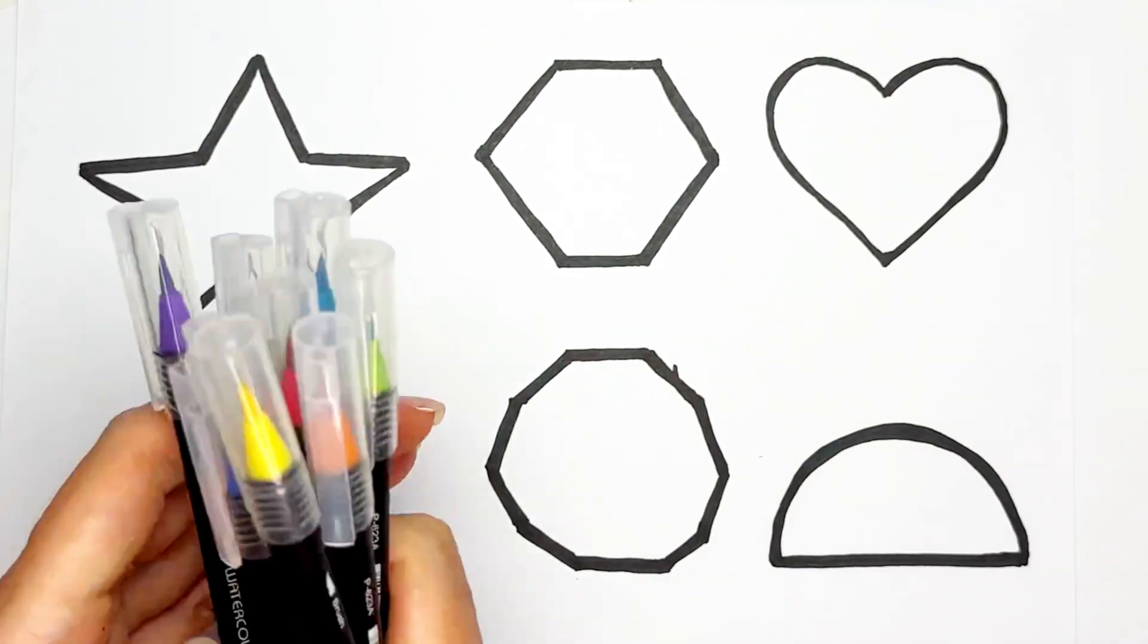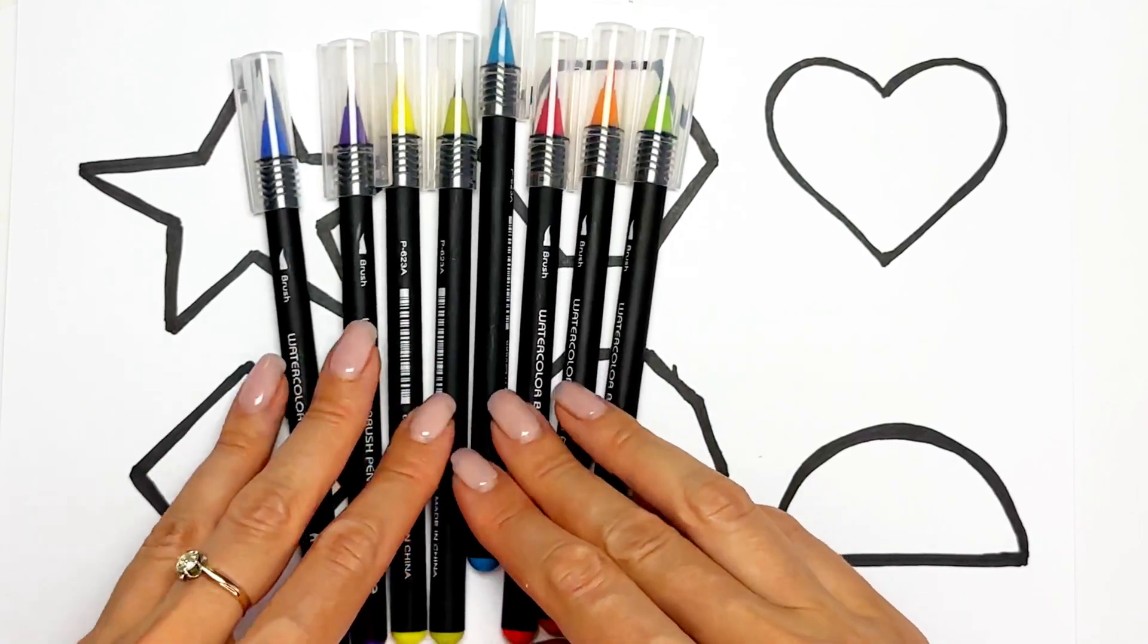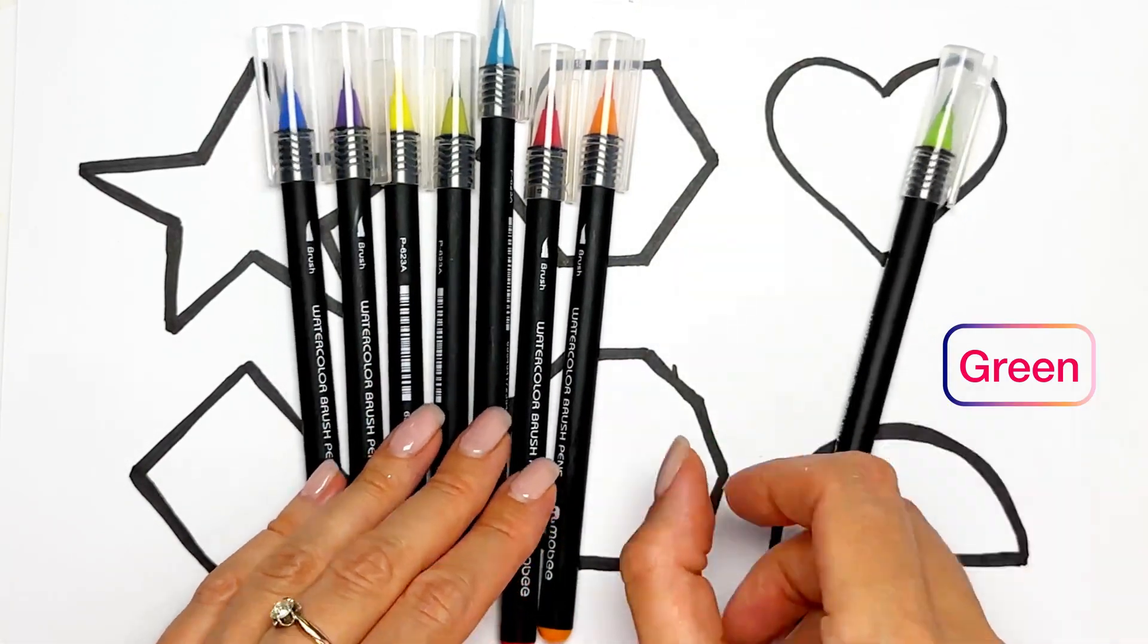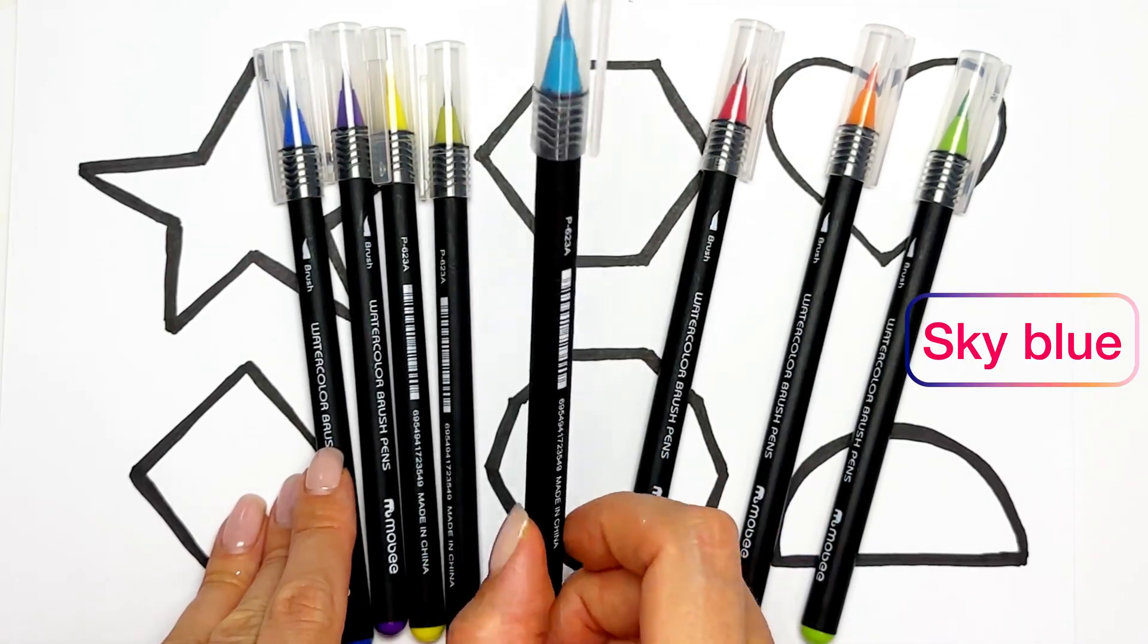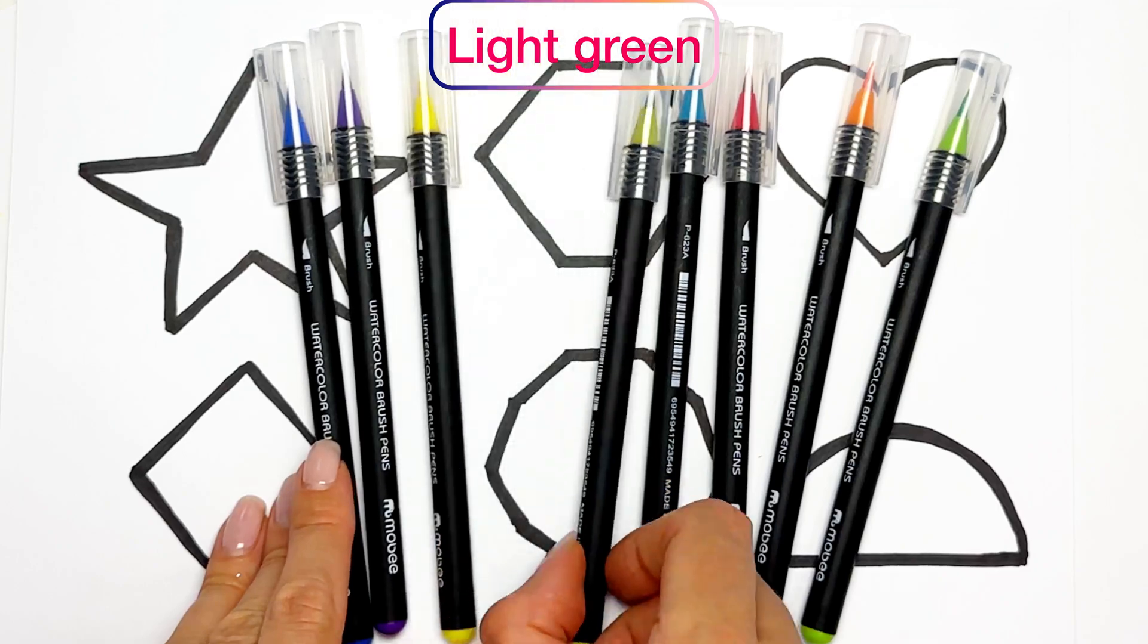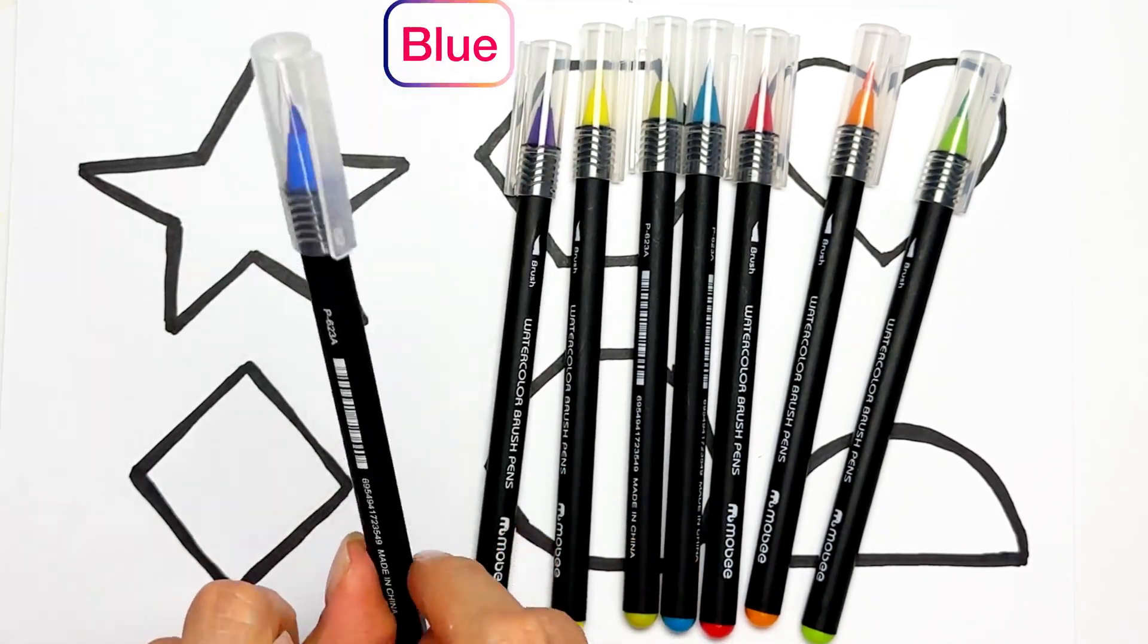Let's color them. We have green color, orange color, red color, sky blue color, light green color, yellow color, purple color, and blue color.